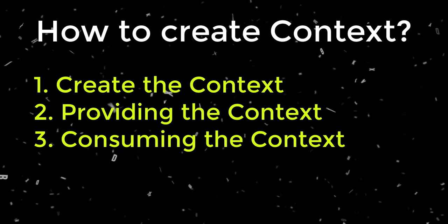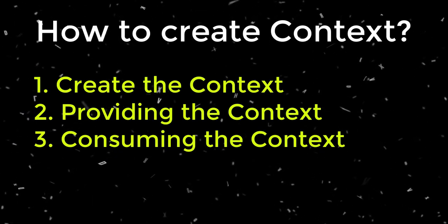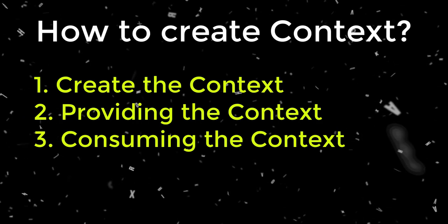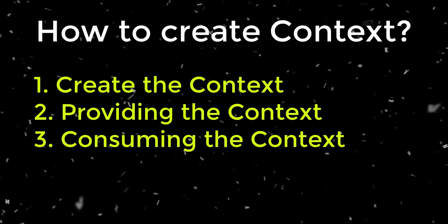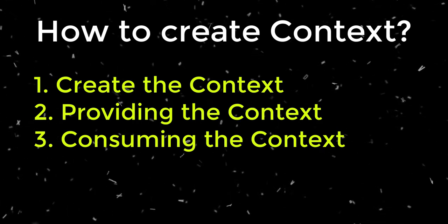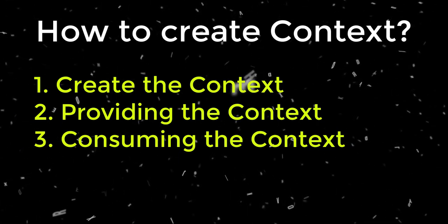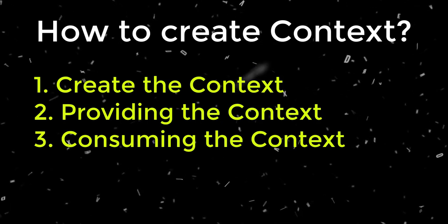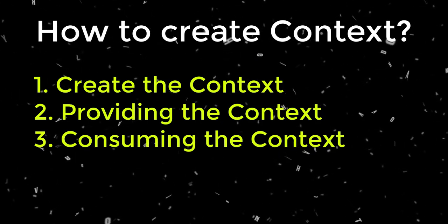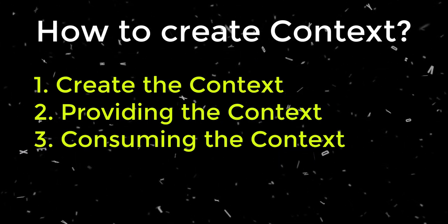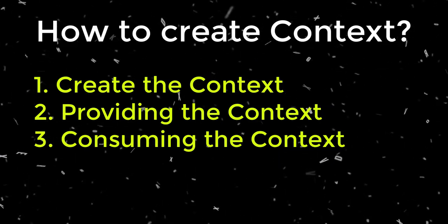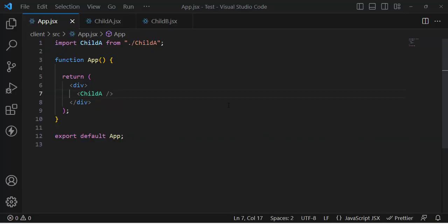So the reason we use useContext is to store data in the parent, and all components wherever we want can access that global data. To use the context hook there are three steps: first, create the context; second, provide the context; and third, consume the context.